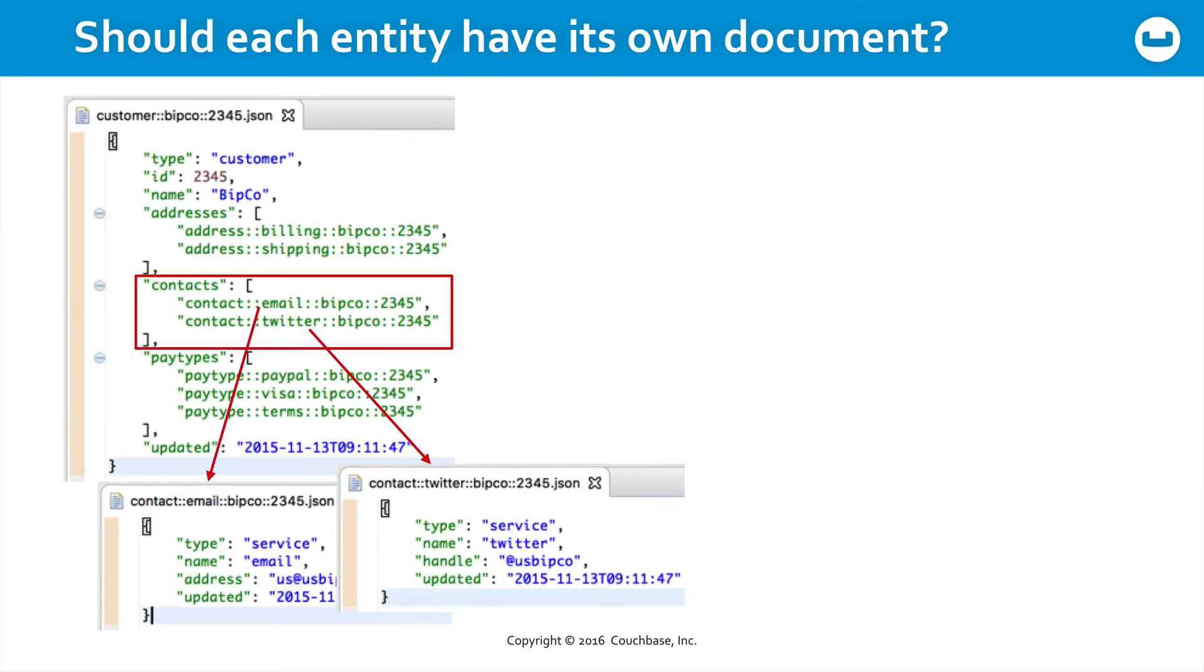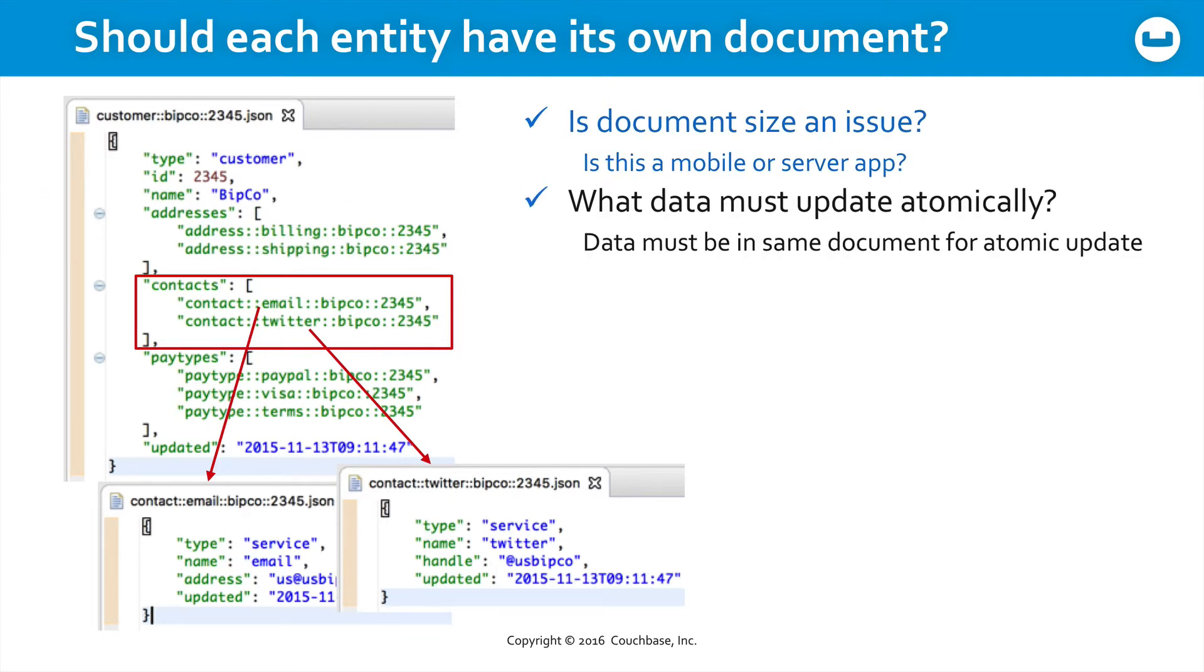And should each entity have its own document? Here we see that the contacts could be listed as an array, where each element in the array is a document ID, and then all of the detail for that particular contact is contained in a separate document. Well, is document size an issue? Is this a mobile app or a server app? Does this data need to update atomically? It has to be in the same document for an atomic update, but perhaps that doesn't matter with contact information. Is speed a factor? Should all of this data be contained in a single document so that it's immediately available without any further joins or requests?